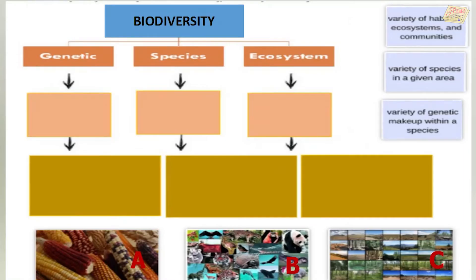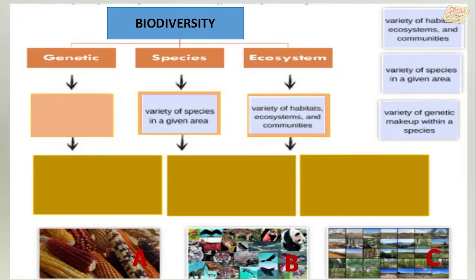Now let's have an activity. Let us make a concept map about the three types of biodiversity. Choose the correct definition of each type and write it in the space provided, then choose the letter that corresponds to a correct example of each biodiversity. Ecosystem diversity is the variety of habitats, ecosystems, and communities. Species biodiversity is a variety of species in a given area. And genetic biodiversity is a variety of genetic makeup within a species.